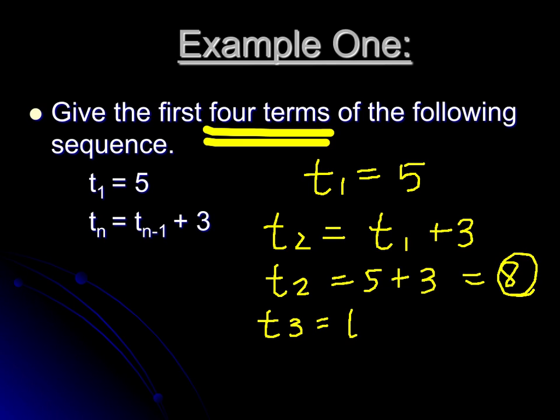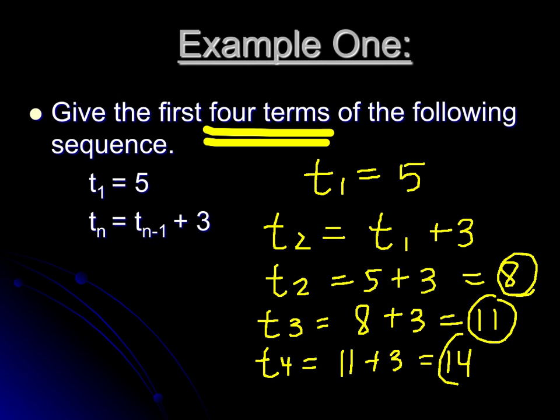For t₃, we want to take t₂, which is 8, I'm just going to write that right in, and add 3 to that, so we get 11. Finally for t₄, we need to take t₃, which is 11, and add 3 to get 14. So it asks us for the first four terms. Your answers are 5, 8, 11, and 14.